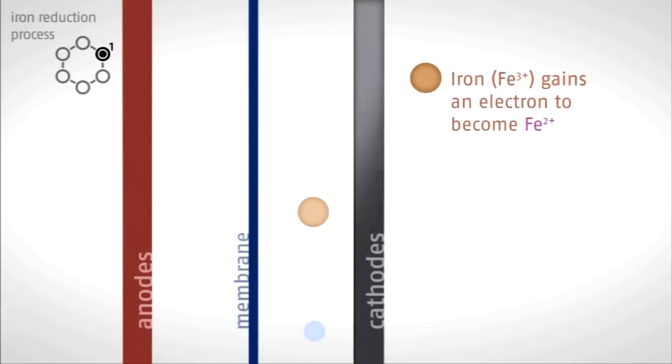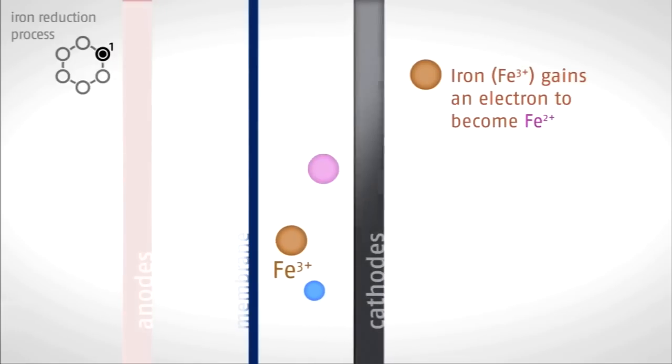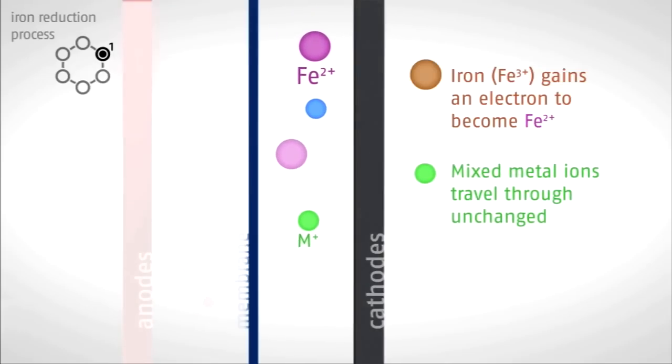The leachate is pumped past the cathodes where, during stage 1, the ferric iron gains an electron. The remaining dissolved metals pass through unchanged and the anodes attract the sulfate anions through the membrane.